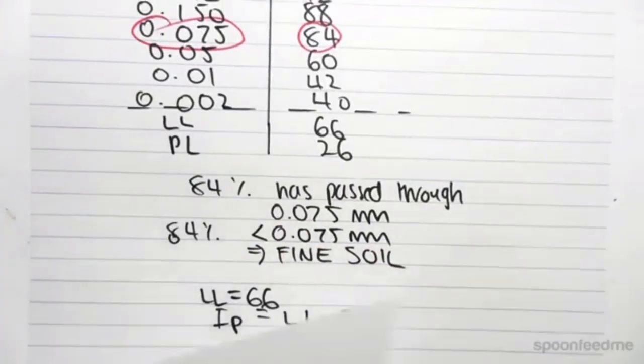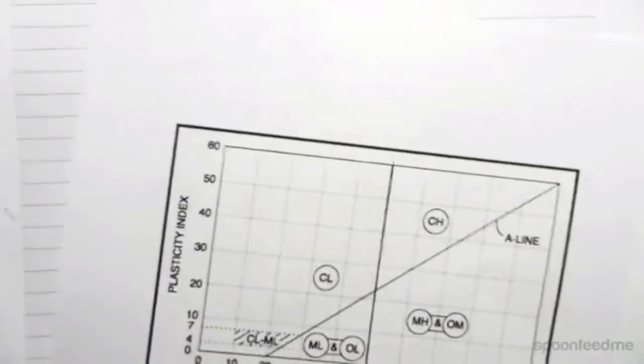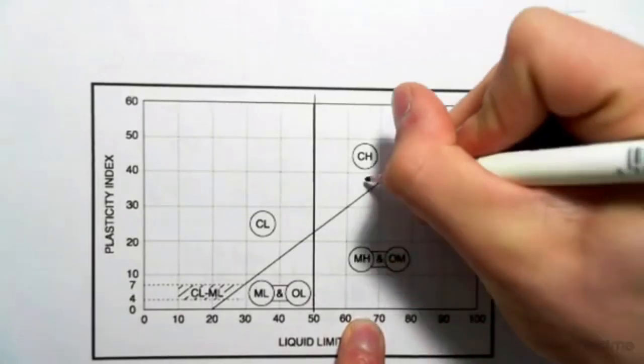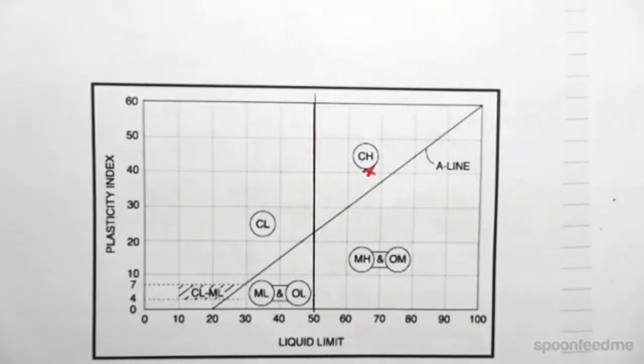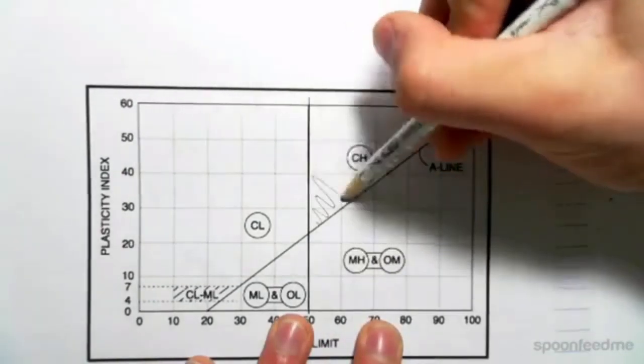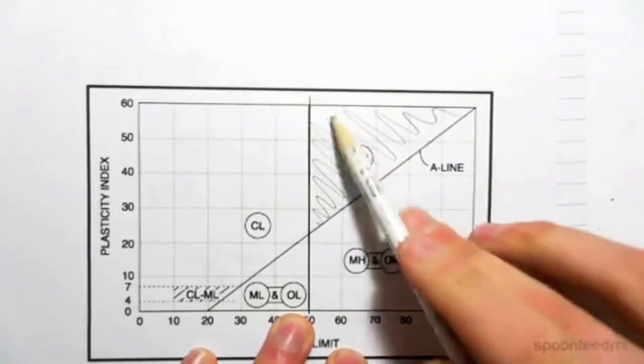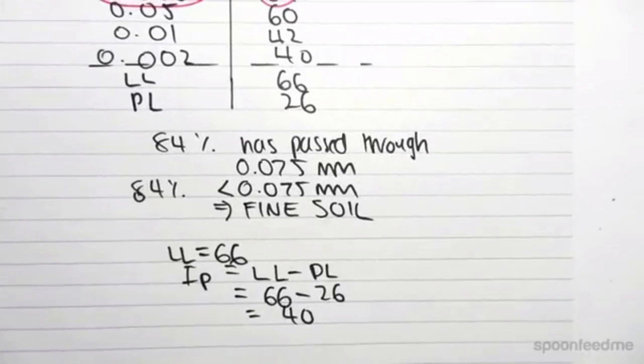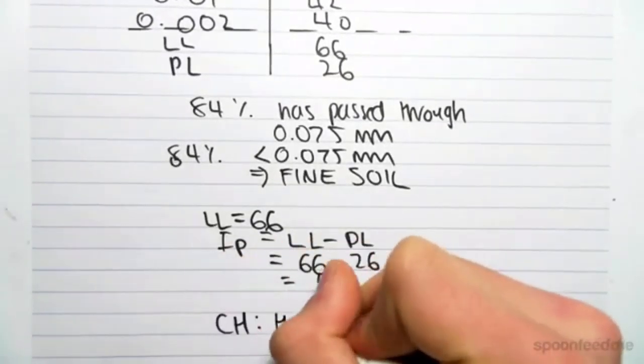So we're going to graph these two values. So 66 and 40. So the liquid limit was 66, which is around here, and the plastic limit, which is 40, which takes us to a value around there. And we are in this section of the graph. We're in this triangle here. And anything in this triangle is defined as a CH. So our soil will have successfully defined as a CH, which is a high plasticity clay.